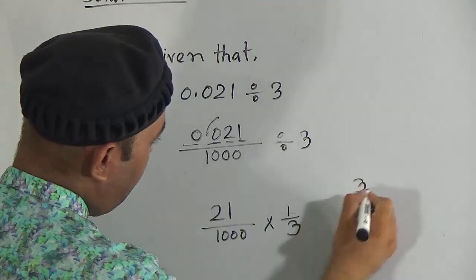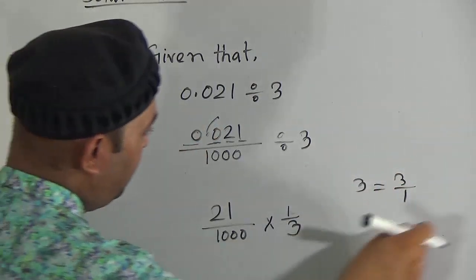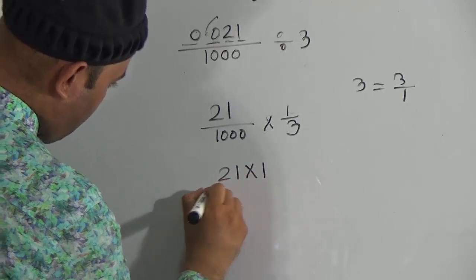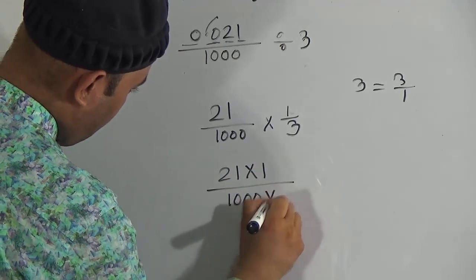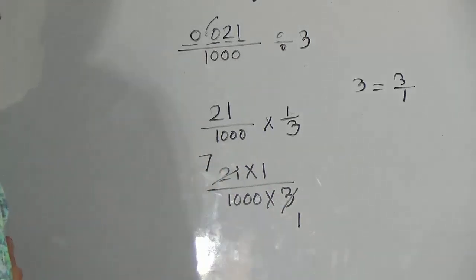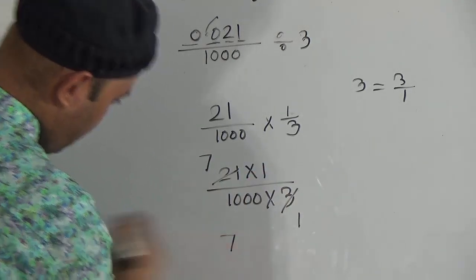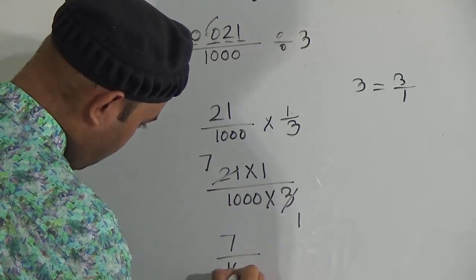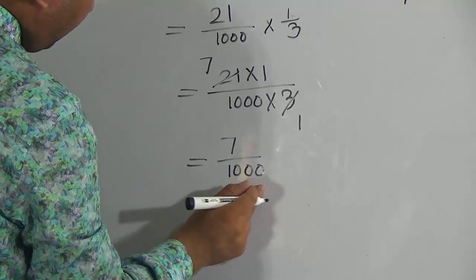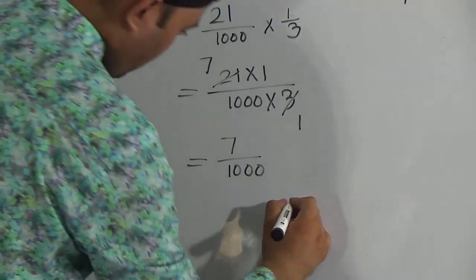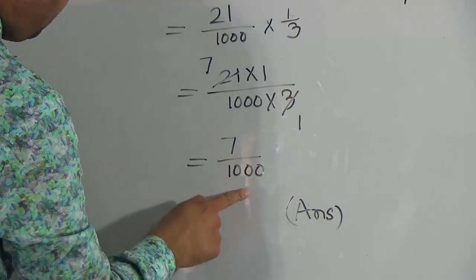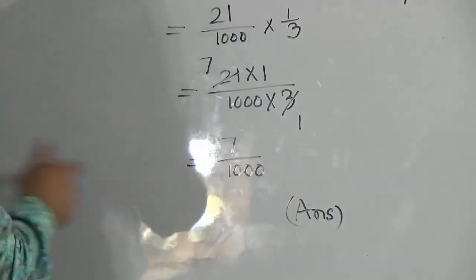Because 3 equals 3 divided by 1, if we reverse it we get 1 divided by 3. So we calculate 21 multiplied by 1, divided by 1000 multiplied by 3. This gives us 21 divided by 3000, which equals 7 divided by 1000. This is the answer to division question A. Hope you understood this one.